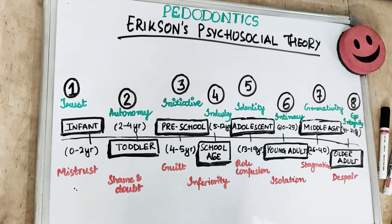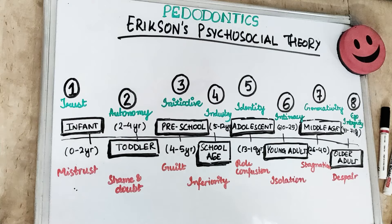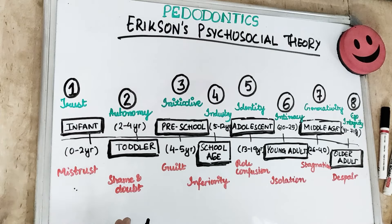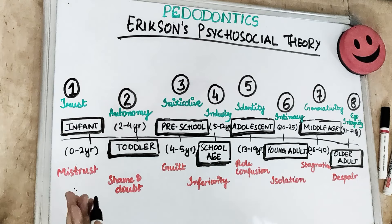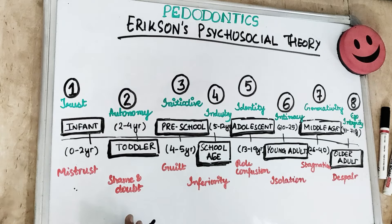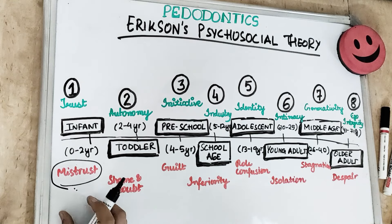Coming to the first stage: trust versus mistrust, which happens during infancy. The infant is focused on feeding and basic care. An infant cannot survive without help and needs someone to meet all his needs. If an infant is well-handled, nurtured, and loved, he gets a feeling of security and trust — most often with the mother. However, if the baby is not paid attention to, if parents are too busy, or if the baby is handled badly, then mistrust and insecurity develop in the child at the infancy stage.